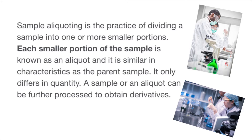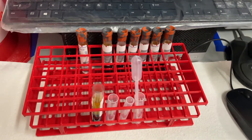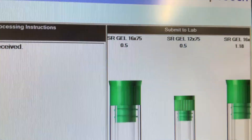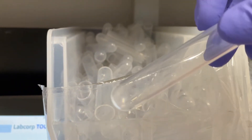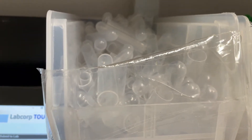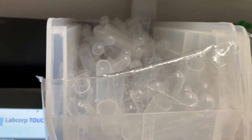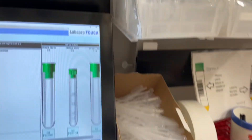You can say pipette or you can say aliquot — the medical term is aliquot. Sample aliquoting is the practice of dividing a sample into smaller portions. Each smaller portion of the sample is known as an aliquot. It says 0.5 for a 16 by 75 tube, so we're going to process it.